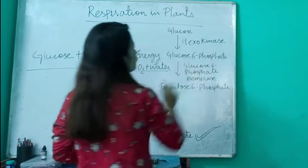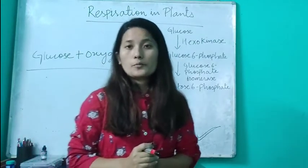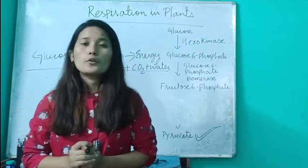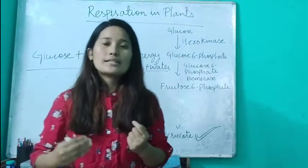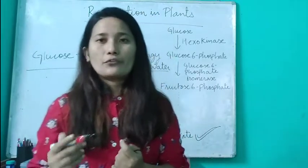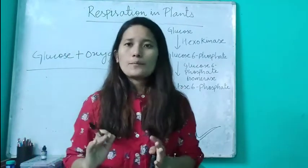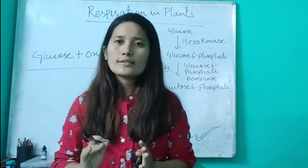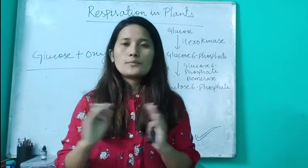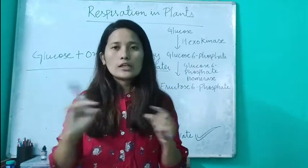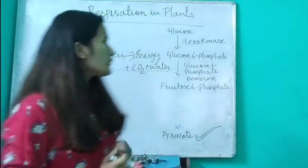Further, your glucose-6-phosphate would be converted into fructose-6-phosphate, and further fructose-6-phosphate would be converted into fructose-1,6-bisphosphate. So it is a series of 10 steps regulated by different enzymes. You don't have to go into detail about all 10 steps — you just need to know that in glycolysis, glucose is converted into pyruvate. Though respiration is written in a single equation, it does not mean it is a single-step process.